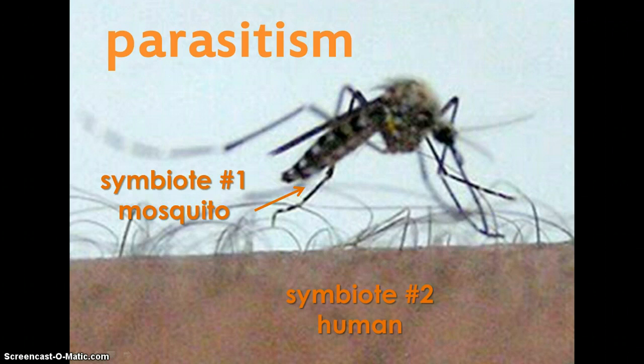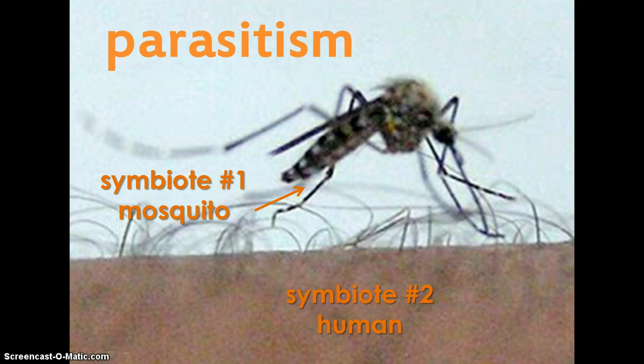This next example is parasitism — one that many of us are all too familiar with. Symbiote number one is the mosquito, and symbiote number two is a human. The mosquito is benefiting by drawing blood, which it uses as a food source, from the human. And as we all know, when you get bitten by a mosquito, we are certainly harmed — it could be itchy, it could get infected, or it could just be plain old uncomfortable. That's parasitism.